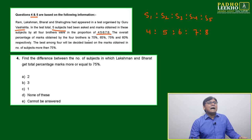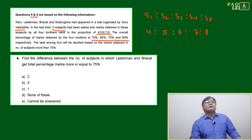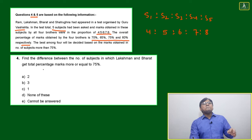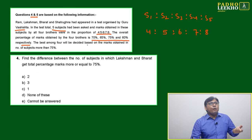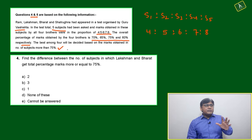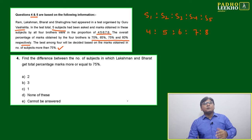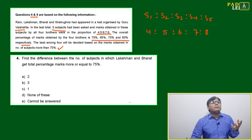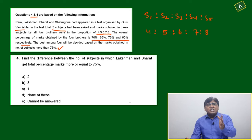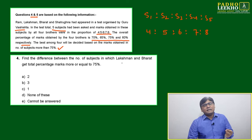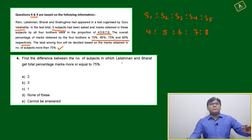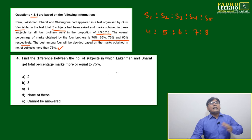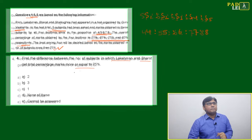The overall percentage of marks obtained by the four brothers are 70%, 65%, 75%, and 60% respectively. That means Ram is getting 70%, Lachman 65%, Bharat 75%, and Satrugna 60%. The best among the four is decided based on the number of subjects in which they scored more than 75%. Best and worst will be identified from these five subjects, and the other two brothers will fall in between.